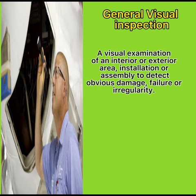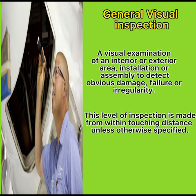General Visual Inspection: A visual examination of an interior or exterior area, installation or assembly to detect visible damage, failure or irregularity. This level of inspection is performed within touching distance unless otherwise specified.